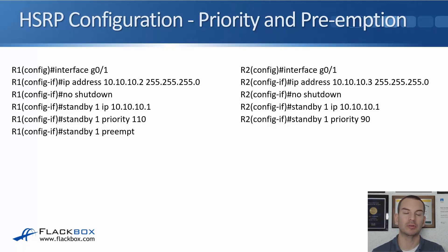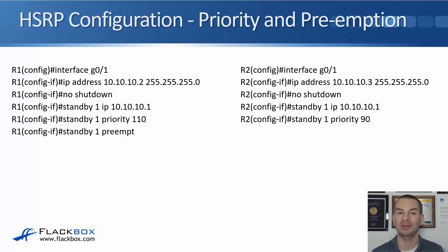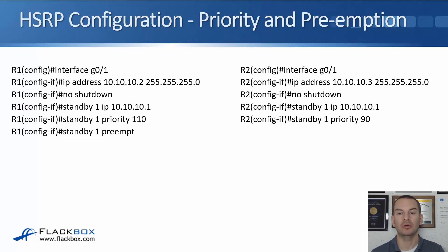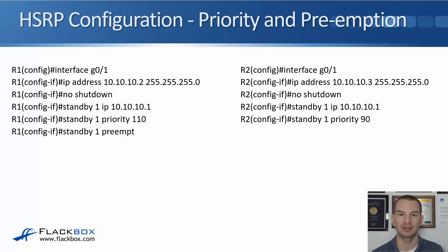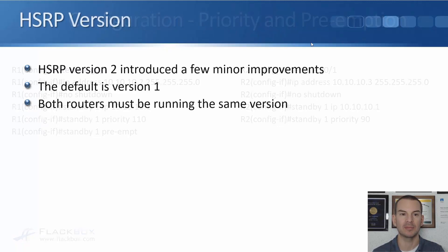The default priority is 100, so here R1 will be preferred because the higher value is better. We have enabled preemption on R1. If we hadn't put in standby 1 preempt, R1 would be preferred when both routers come up at the same time, but if R1 fails over to R2 and R1 comes back, R2 would remain active. Okay, so that's priority and preemption.